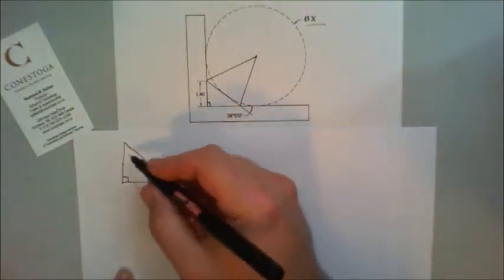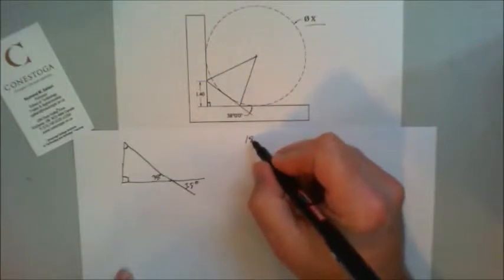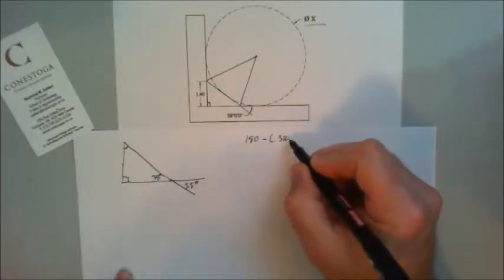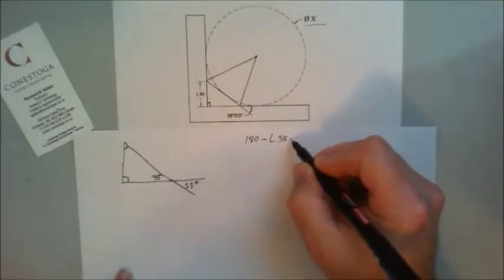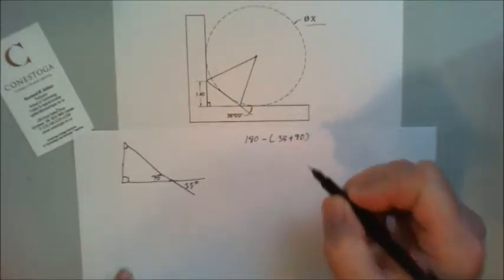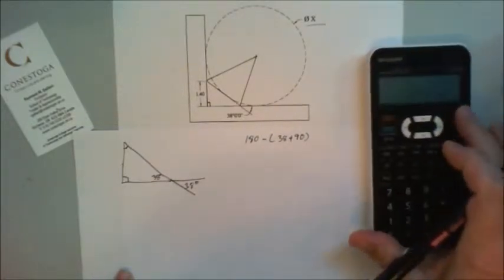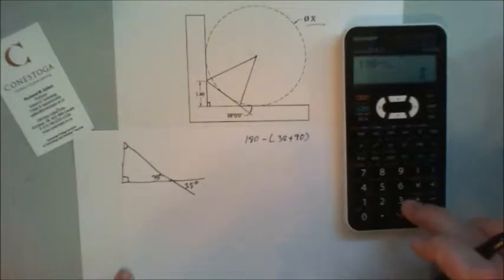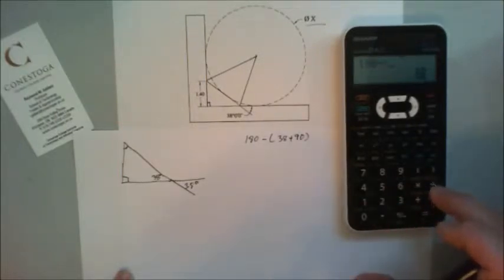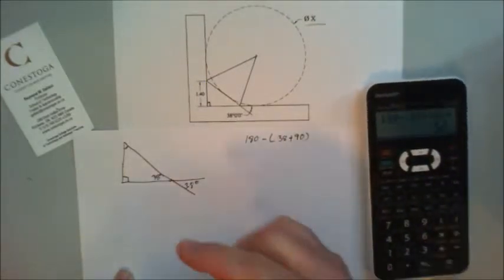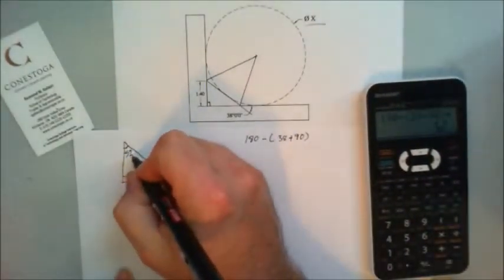We're going to say we want to find out what this angle is here. So we're going to go 180 minus 38 degrees plus 90. 180 minus bracket 38 plus 90 bracket, it comes out at 52.